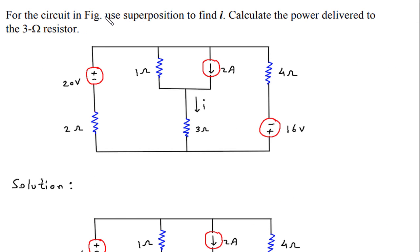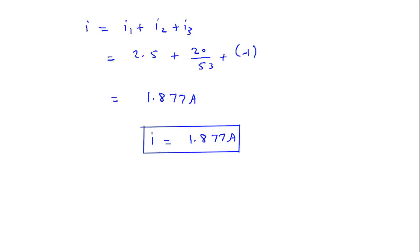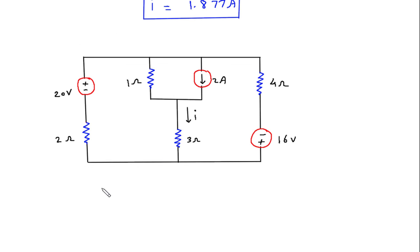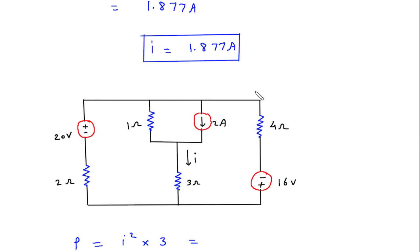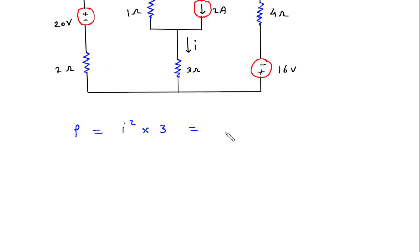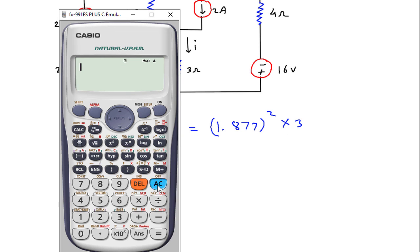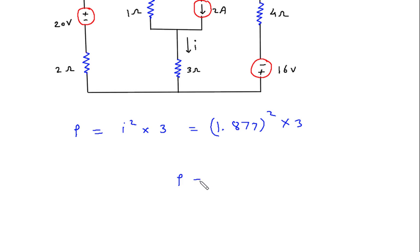Next we have to find the power delivered to the 3 Ohm resistor. Power is equal to I squared into R, where R is 3 Ohm. So power = 1.877 squared into 3 = 10.56 Watt.